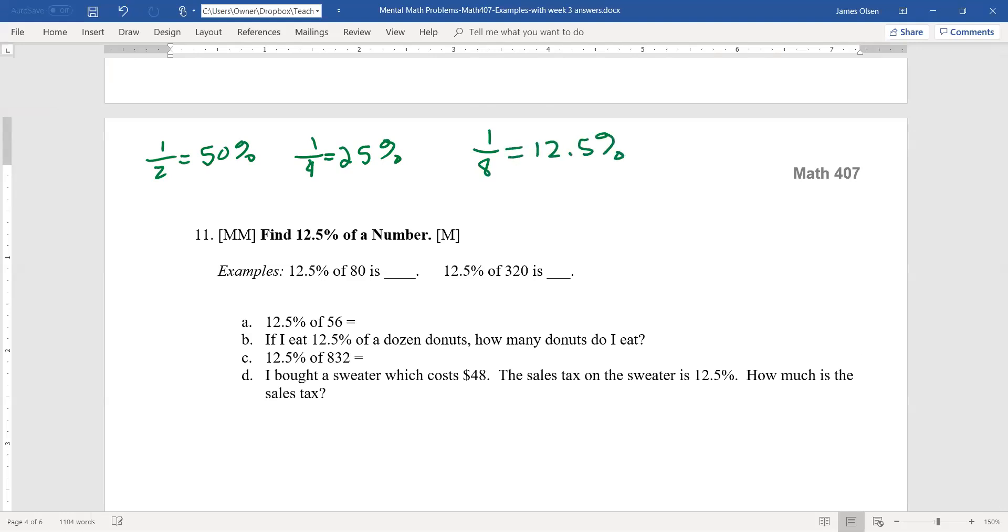So we have 12.5%. So in my first example, I have 12.5% of 80. I just take 80 divided by 8 and I get 10.